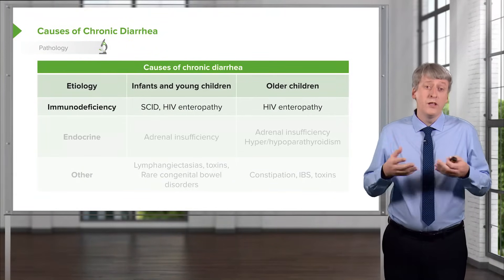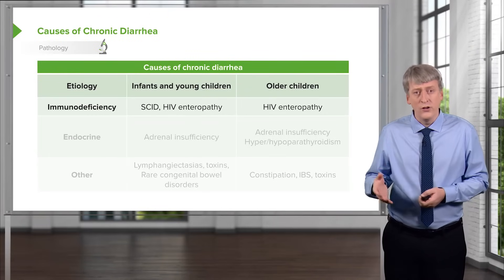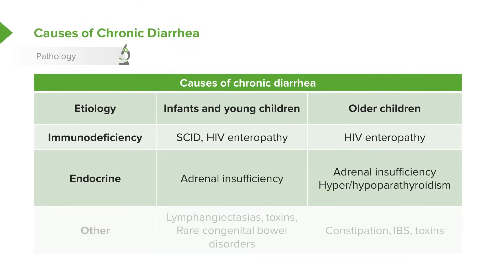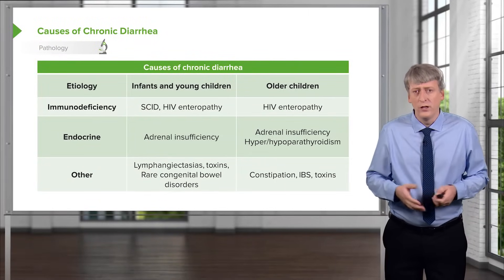Additionally, you may see children with immunodeficiency — these children will usually get other infections as well, things like severe combined immune deficiency or HIV. Adrenal insufficiency can cause chronic diarrhea, as can hyper- or hypoparathyroidism, so endocrinopathies can also be responsible. Other problems include rare things like lymphangiectasis, toxin exposure, and rarely congenital bowel disorders. In older children, constipation can cause what appears to be diarrhea — it's actually encopresis, liquid stool squirting around the hard ball of stool the child can no longer pass. Irritable bowel syndrome starts to happen in older children as well.